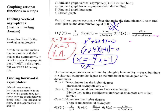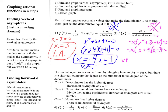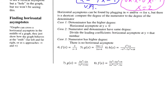Same idea with number three — set the denominator equal to 0. Here I'll factor out a negative x, then find two numbers that multiply to negative 18 and add to 7: that's 9 and negative 2. So we get x times (x plus 9)(x minus 2). We'll have three vertical asymptotes: at x equals 0, x equals negative 9, and x equals positive 2.